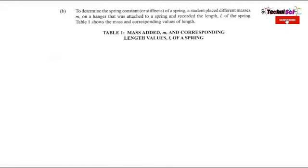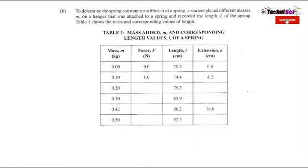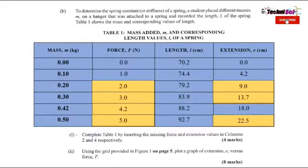So now we're going to part B and I have a surprise for you. This says to determine the spring constant or stiffness. A student placed different masses M on a hanger attached to a spring and recorded the length L of the spring. Table 1 shows the mass and corresponding values of length. If you follow my channel you would recognize that we have covered this one already. This is the table from the previous video — I'm going to link it in the i-cards as well as the description below. We completed this table already and done B1 for four marks.